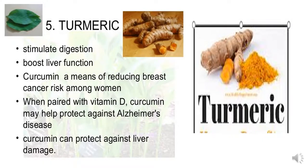Next one is turmeric. The uses of turmeric include: it stimulates digestion, boosts liver function. Curcumin — a compound in turmeric — is a means of reducing breast cancer risk among women when paired with vitamin D.